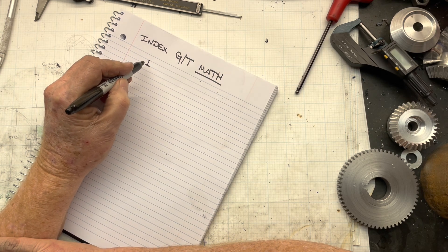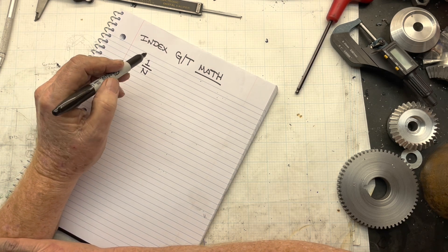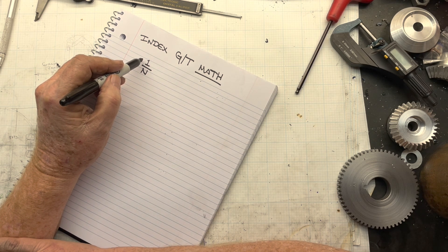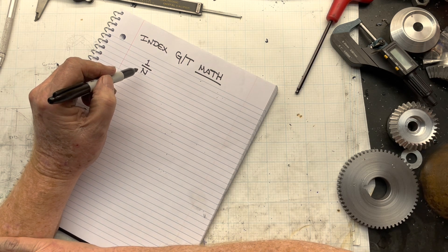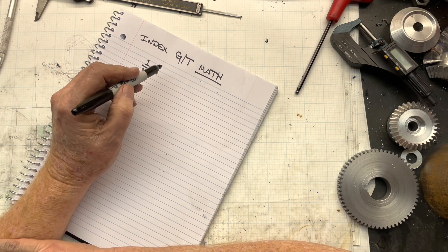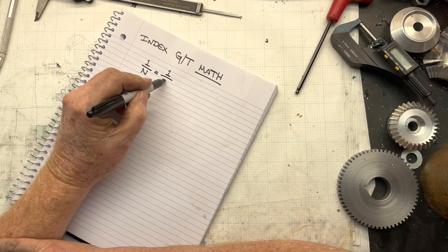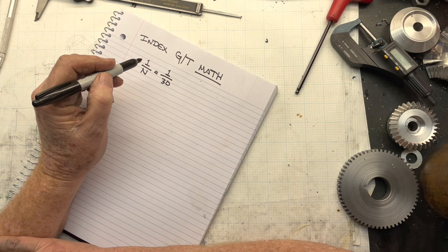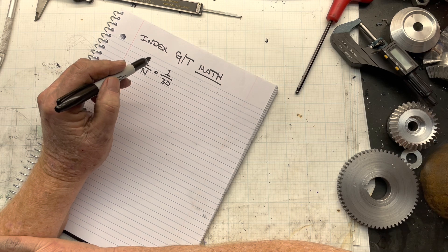Fundamentally, I think everybody knows that when you're interested in hobbing gears, what you care about in the index train is this relationship. This is one revolution of the work piece, the gear blank, to every n revolutions of the spindle, and that's the hob. So you have to have, for a 30-tooth gear, you have to have one revolution of the gear for every 30 revolutions of the hob. And that's basically the business that we're in with an index gear train is figuring out how to produce that relationship.